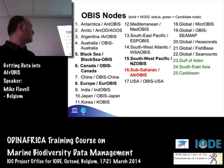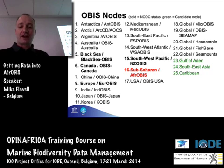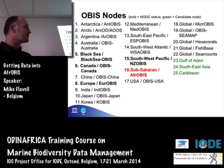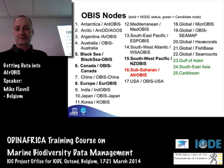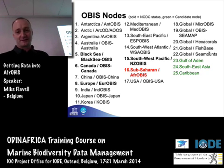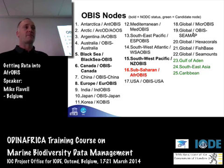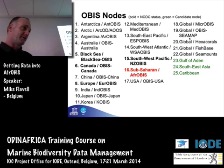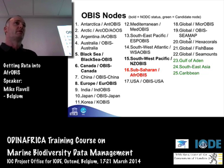We have regional nodes that are geographic, and we have some nodes that are thematic — things specialized about corals, fish, and seamounts. We have OBIS-CMAP, which specializes around marine megafauna and seabirds. Afro-OBIS fits into that network of nodes.